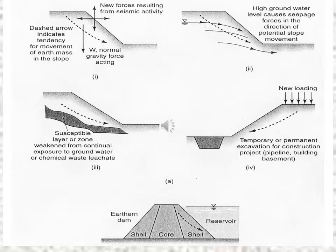The diagram shows a slope where the weight acts downward due to gravity, causing the slope to slide down. New forces resulting from seismic activity can also cause the slope to fail. Continual exposure to groundwater and new loading are among the factors that lead to slope failure.